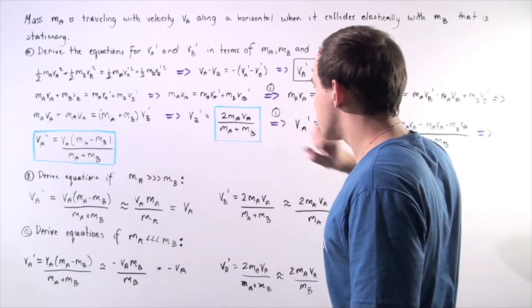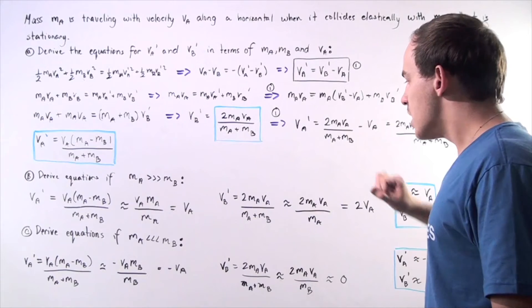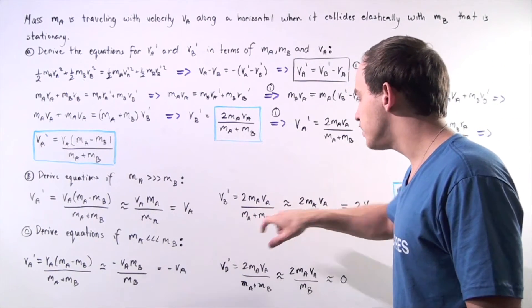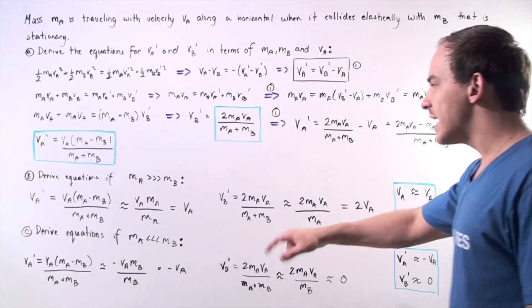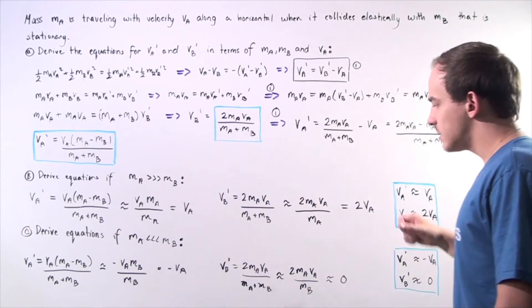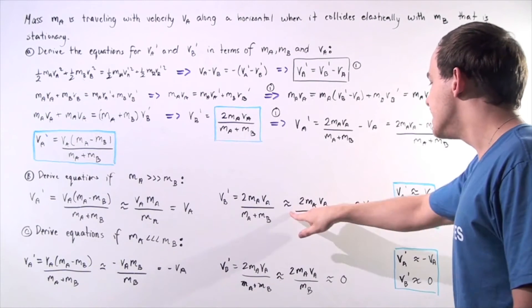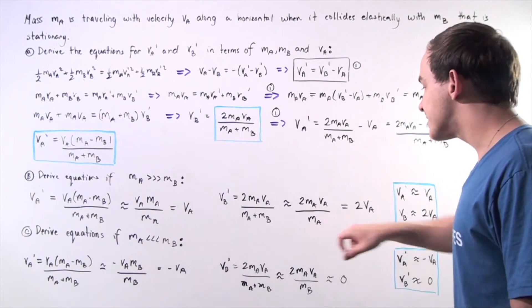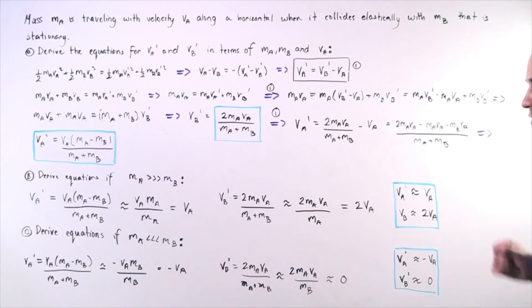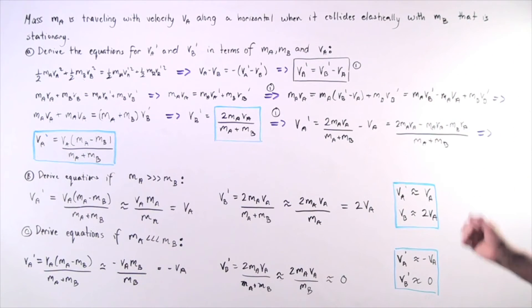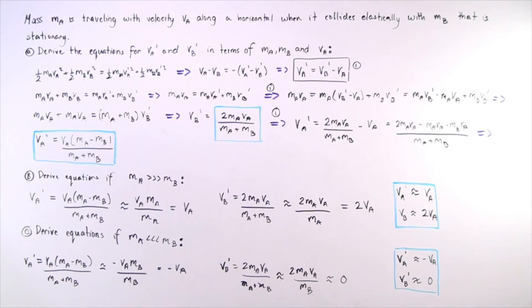Likewise, for VB prime, we approximate MA plus MB as MA, giving two times MA times VA divided by MA. The MA's cancel, and VB prime is approximately equal to twice the initial velocity VA. So when the mass of object A is much larger than object B, object A continues at roughly the same speed while object B moves away at twice object A's initial velocity.